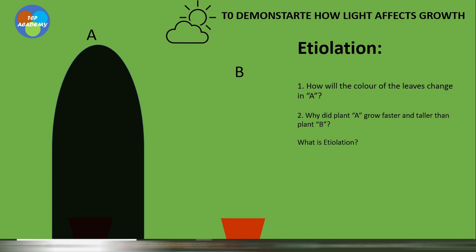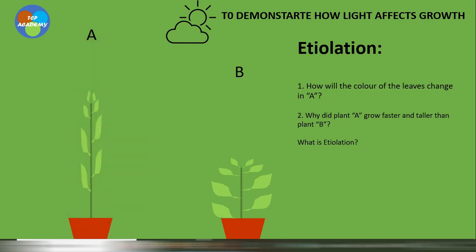Here we look at an experiment that demonstrates etiolation. Plant A is exposed to a dark condition and is growing much faster than Plant B, which is exposed to light. In the comments below, tell us: how will the color of the leaves change in Plant A? Why did Plant A grow faster and taller than Plant B? And explain what etiolation is.